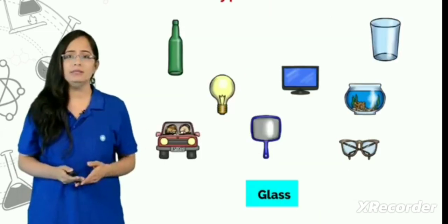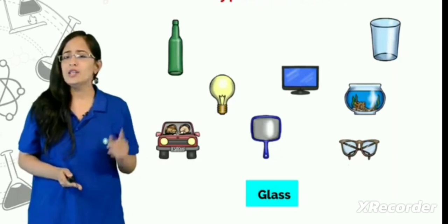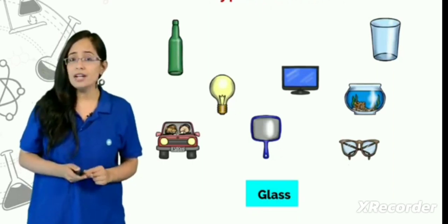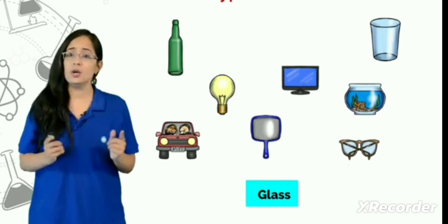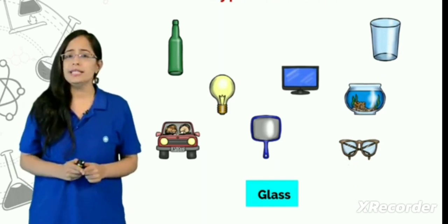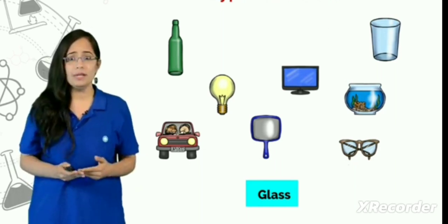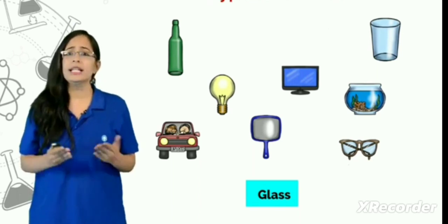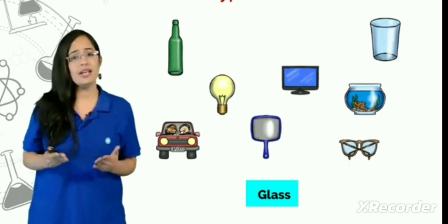For example, glass. Glass is a very important material which is used to manufacture various kinds of things and objects. For example, various kinds of electrical equipment, various automobiles, glasswares, utensils, etc.